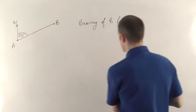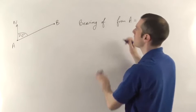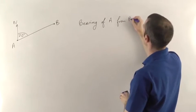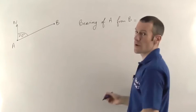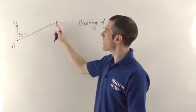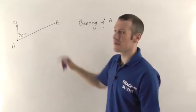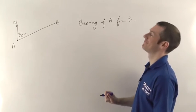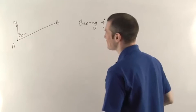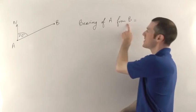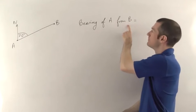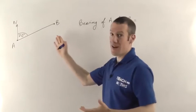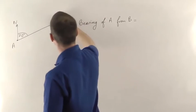The question this time wants to find the bearing of A from B — so we're going the other way around. Pause if you want to have a go. Here's the solution: focus on where you're going from. You're going from B, so you must have a north line at B. We don't have one, so let's draw one in — that's the first step.